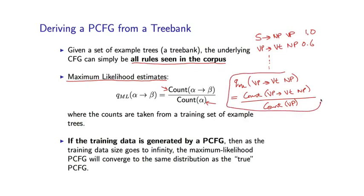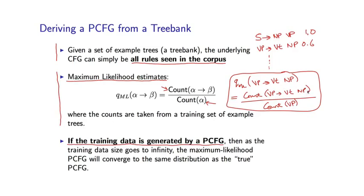These counts are taken directly from the example trees in the treebank. There are various guarantees for these kinds of estimates. If the treebank is actually generated by some underlying PCFG, you can show that as the training data size gets larger and larger, these parameter estimates will get closer and closer to the true underlying probabilities in the PCFG generating the data. That leads fairly directly to the property that the distribution over entire parse trees defined by our learned PCFG converges to the correct underlying distribution. Bottom line: given a treebank, it's very easy to learn a PCFG — we simply read off the rules and calculate these maximum likelihood estimates, which amounts to counting non-terminals and counting entire rules.